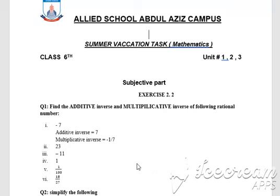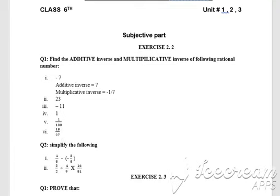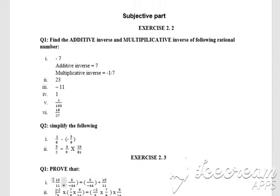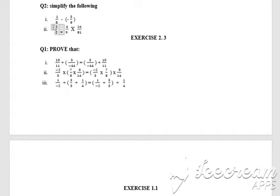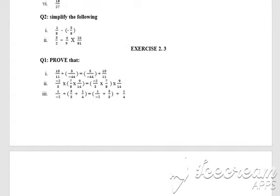Question number 2 is to simplify the following. You just have to remember the BODMAS rule to solve these questions. First, you have to solve brackets if you find any. Then you have to solve division, then multiplication, and then addition and subtraction. Your exercise number 2.3 is also included in this video, as it also comprises the BODMAS rule. You have to solve all these exercises using the BODMAS rule.